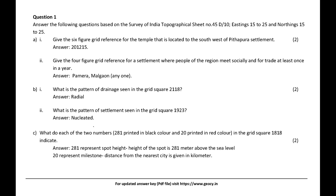What is the pattern of drainage seen in the grid square 2118? Answer: Radial. What is the pattern of settlement seen in the grid square 1923? Answer: Nucleated.